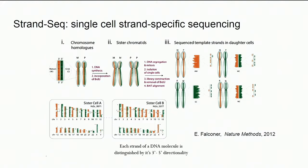A particularly useful new technology for phasing is Strand-seq — a single-cell sequencing approach where cells are replicated in the presence of BrdU. After sample preparation, individual cells are sequenced and reads are mapped to a genome. When reads from one cell map to both strands, all reads from one strand came from one chromosome, so any two reads mapping to the same strand are in phase. The output is essentially telomere-to-telomere phasing of heterozygous SNPs. Since coverage is low, we combined Strand-seq with other technologies for chromosomal phasing.